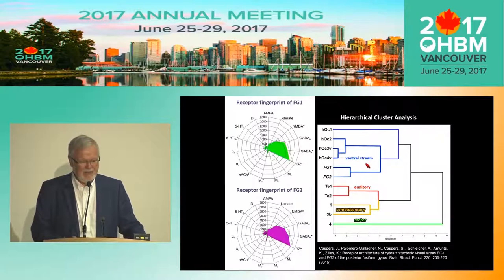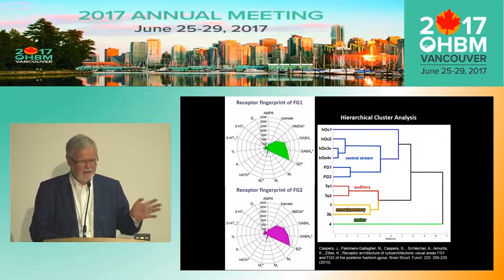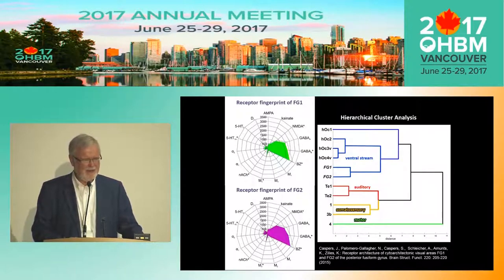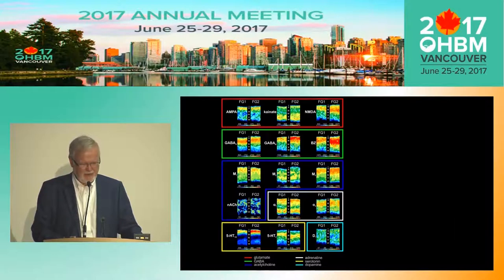Meanwhile, we have also studied areas of the dorsal visual stream, and they sit on their own branch. So ventral and dorsal visual streams can be separated when we look at laminar receptor fingerprints.